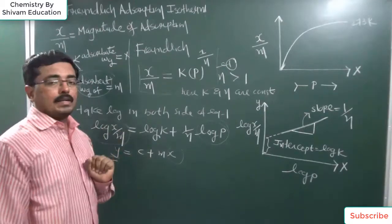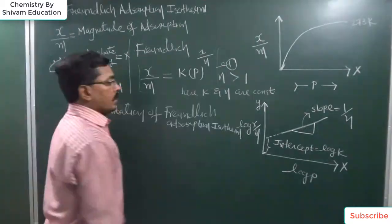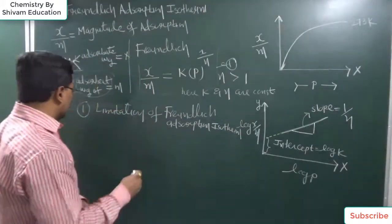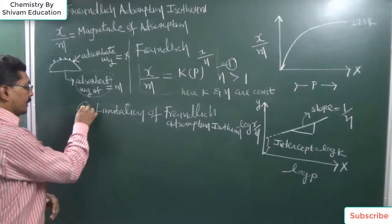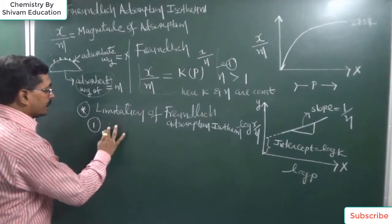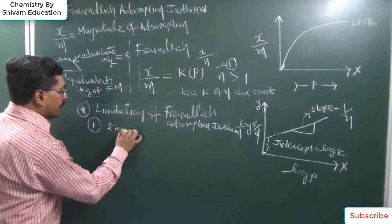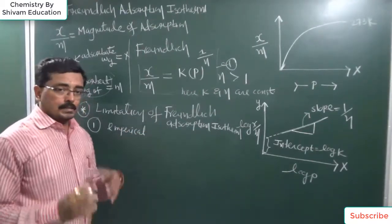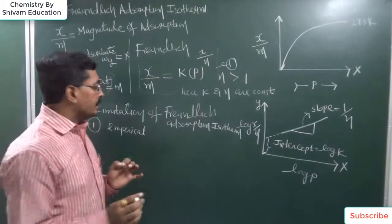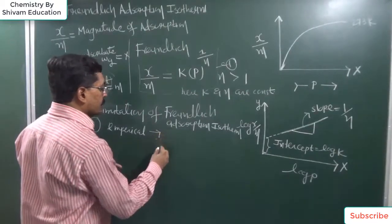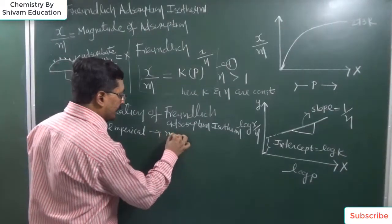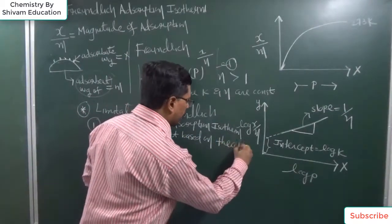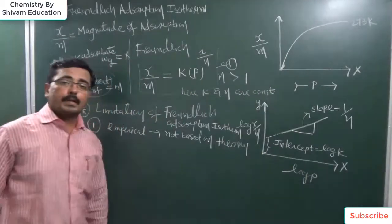This equation has certain limitations. The first limitation is that the Freundlich adsorption isotherm is totally empirical — it is based on assumption and has no theoretical background. It is not based on any theoretical concept.